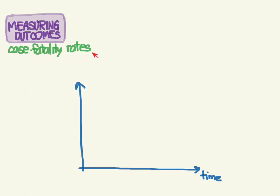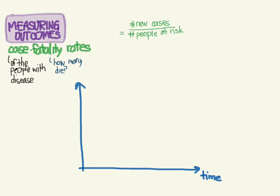Now let's talk about case fatality rates, another special kind of incidence. The name tells you a lot — we're looking at the number of cases and how many of those people die. Using our familiar incidence equation — new cases over people at risk, with a time frame — the time frame is implied as the duration of the disease. In this case, the new cases we're counting are deaths, and the people at risk are anyone who has the disease.